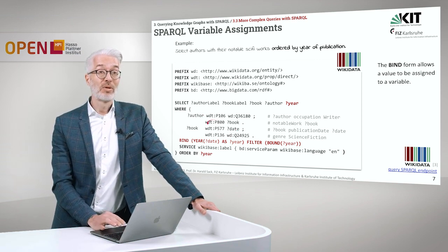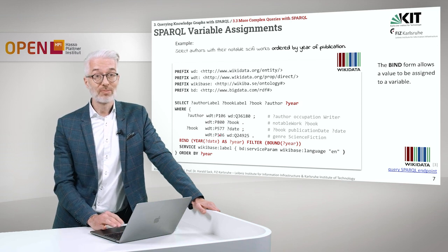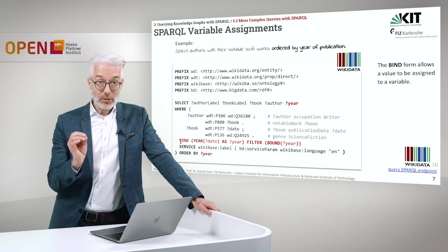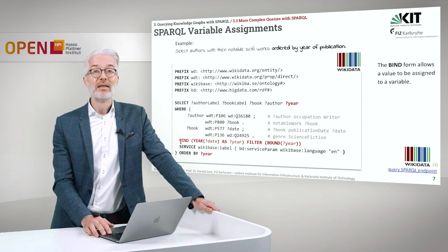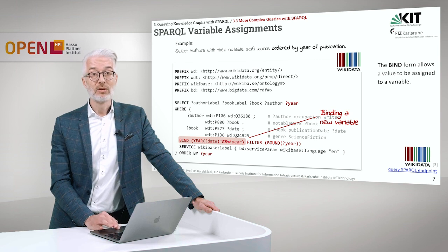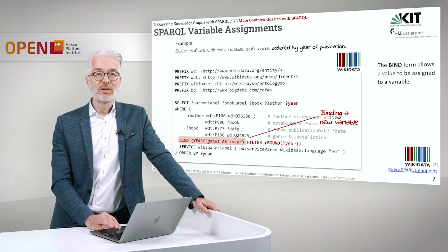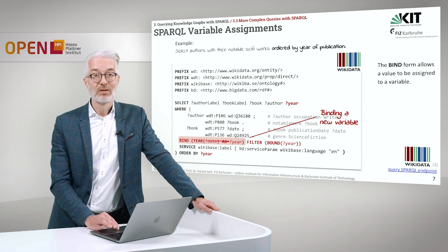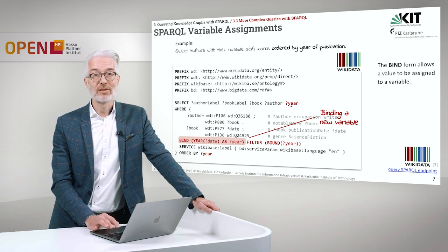We are not talking about all potential authors — we have to restrict this by another constraint, simply saying the genre should be science fiction. Then comes the new thing: we define a new variable that will be bound here. We will BIND a new thing — date — to a new variable that we call year. What we do there is use a modifier, the function YEAR, that extracts from a date expression the year only. We bind this to a new variable called year, and that year is also referred to in the SELECT string.